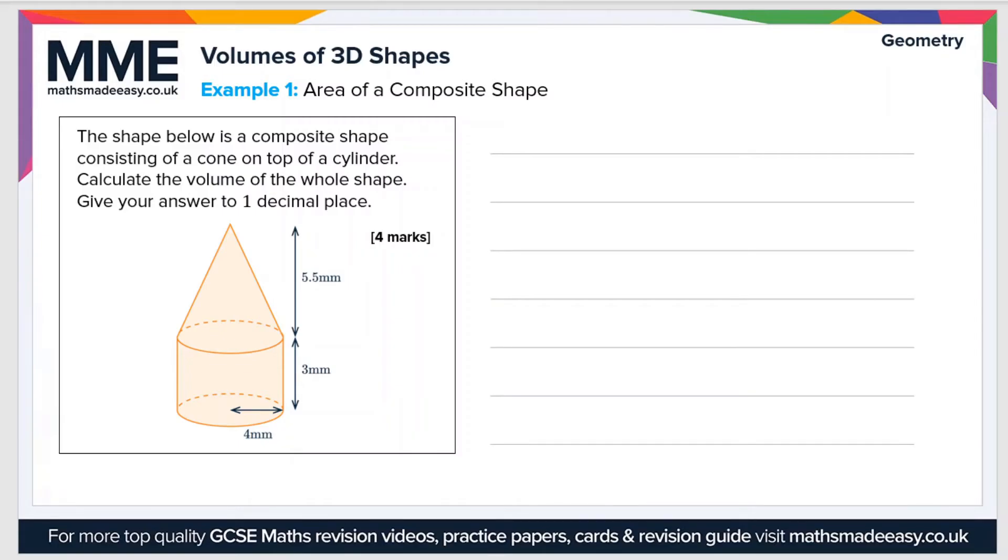So let's have a look at an example question now. The shape below is a composite shape consisting of a cone on top of a cylinder. Calculate the volume of the whole shape. Give your answer to one decimal place. So let's break this up and work out the volume of the cone and the cylinder separately.